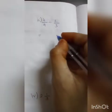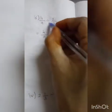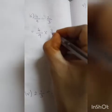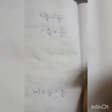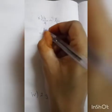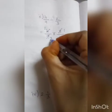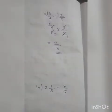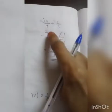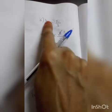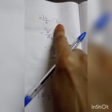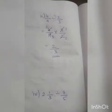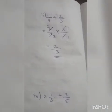Second question: 4/9 divided by 2/3. Division becomes multiplication, 2/3 becomes 3/2. Is there cancellation? Yes. Cancel 2 and 4: gives 2 and 2. Cancel 3 and 9: gives 1 and 3. So 2 ones are 2, 3 ones are 3. The answer is 2/3. Remember: only the number after the division symbol is reciprocated — please don't change the first number.